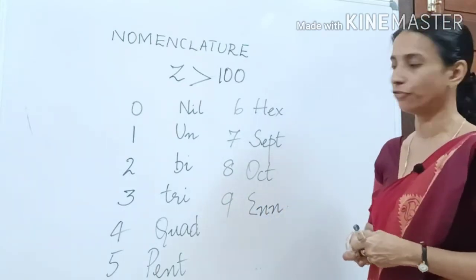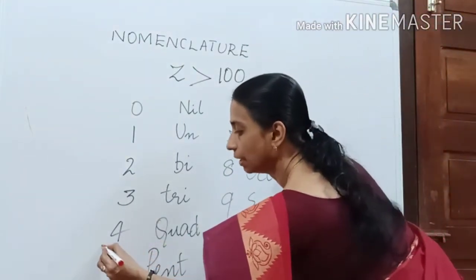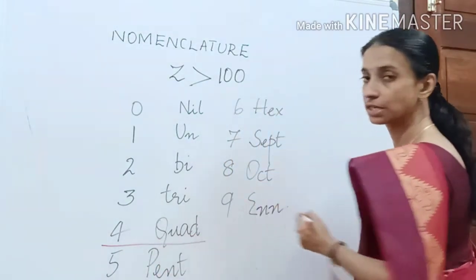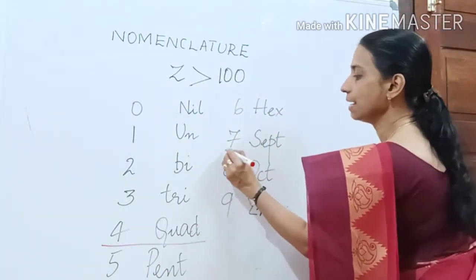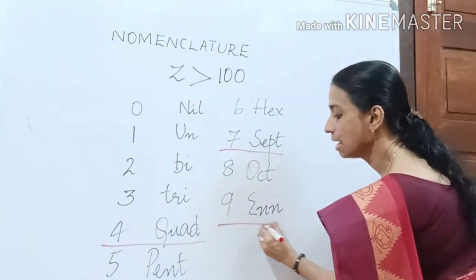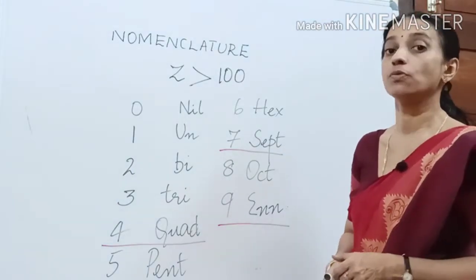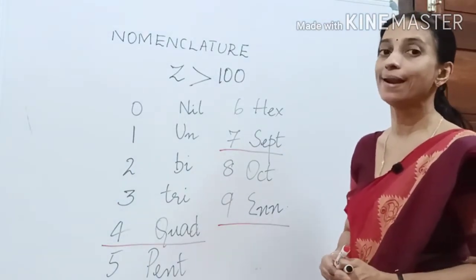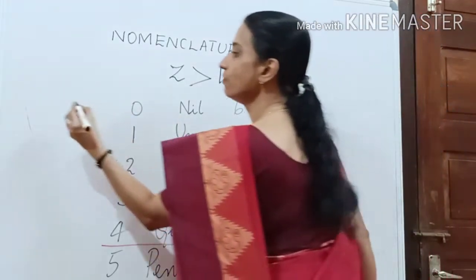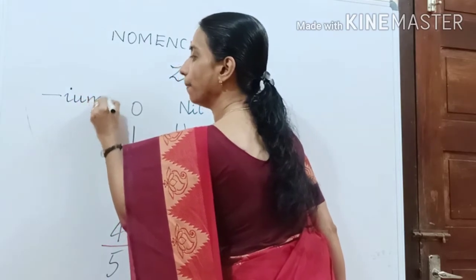So what are the differences here? Only when you come across the number 4, it has the prefix 'quad'. Then 7 is 'sept' and 9 is 'enn'. After learning the prefixes, we should know how to end the name. The suffix given is always 'ium'.